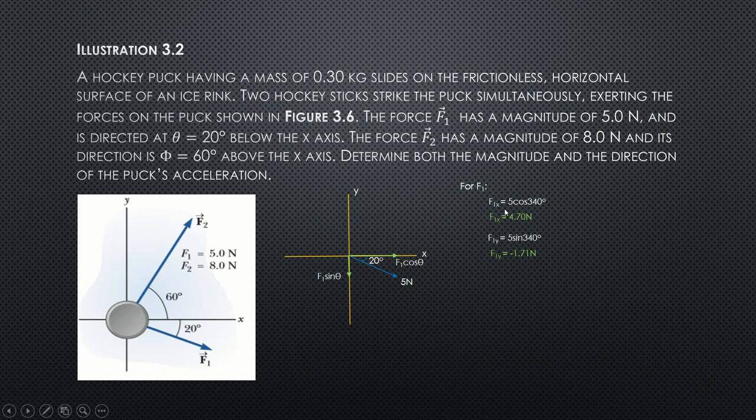For F1, F1x is F cosine 340 degrees. Why 340 degrees? F is force 1, which is 5 cosine 340 degrees. I have used the positive x-axis direction of the angles from positive, so that is 360 degrees minus 20, giving 340 degrees. Solving that using your calculator, you will get an answer of 4.70 N.